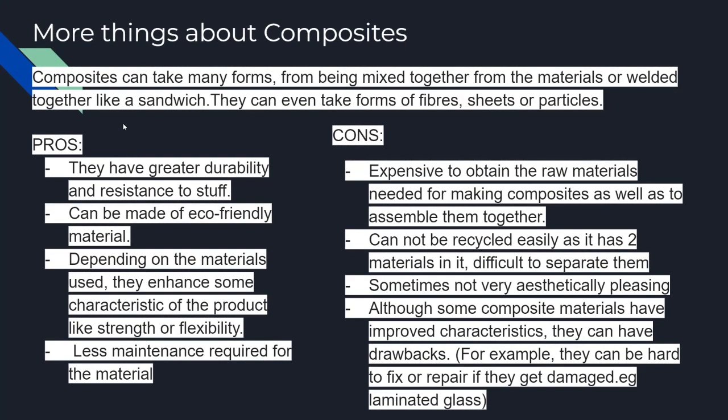Here are some positive and negative aspects of composites. They can take many forms — they can be mixed together, welded together like a sandwich, or take the form of fiber sheets or particles. Positive effects include greater durability, more eco-friendly production, enhanced characteristics such as strength and accessibility, and they require less maintenance.